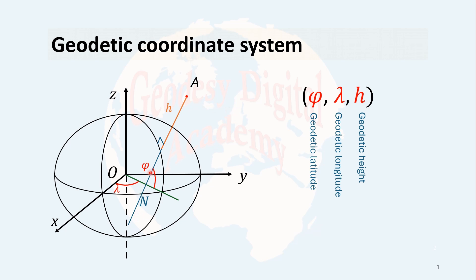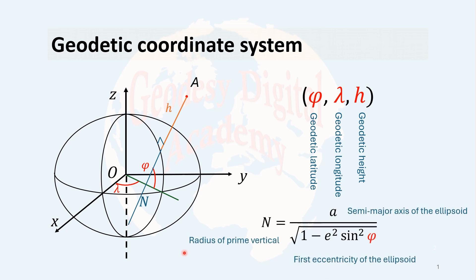Another quantity which is important is N. N is the distance from the point where the normal to the ellipsoid intersects the surface of the ellipsoid, up to the point where this normal meets the rotation or z-axis of the system. N is the radius of the prime vertical. Here, A is the semi-major axis of the ellipsoid, and E² is the first eccentricity of the ellipsoid.